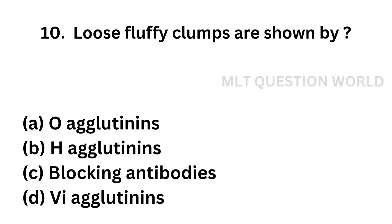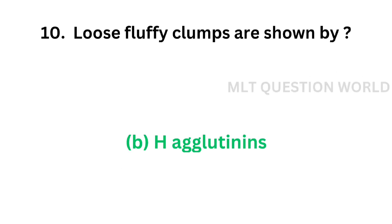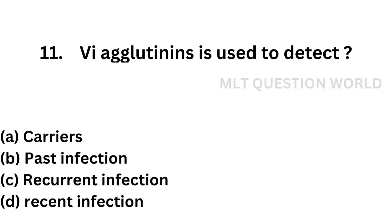Question 10. Loose fluffy clumps are shown by: Option A, O agglutinins; Option B, H agglutinins; Option C, blocking antibodies; Option D, VI agglutinins. The correct answer is Option B, H agglutinins. Loose fluffy clumps are shown by H agglutinins in Widal test.